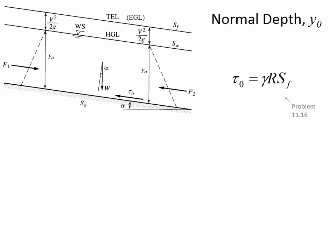Remember there are three different slopes — three different S variables with subscripts. S_F is the slope of the energy grade line, which is an imaginary line above the water surface by the magnitude of the velocity head. S_W is the water surface slope. And S_0 is the slope of the channel. This would be an excellent quiz-style question: what are the three different slopes and what do they mean?